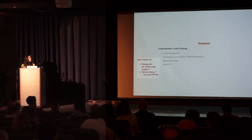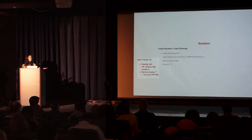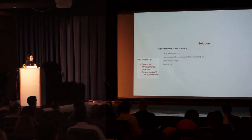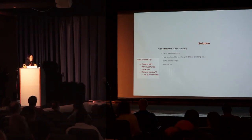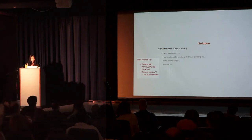There were a lot of code rewrites and cleanup — fixing warnings, errors, type checking, null checking, undefined checking, etc. A best practice tip: develop with the WP_DEBUG plugin enabled; it gives you line numbers for where things break. We removed a lot of inline scripts or deferred them to external files so content loads first. Another best practice: in pure PHP files, remove the closing PHP tag to avoid accidental trailing white space, which can cause header issues.